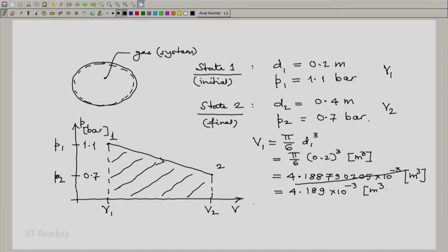In a similar fashion, V2 will be π/6 d2³, which is π/6 × (0.4)³ meter cube, which we note as 0.03351 meter cube.